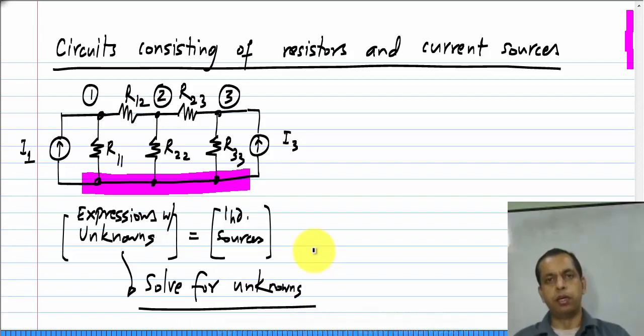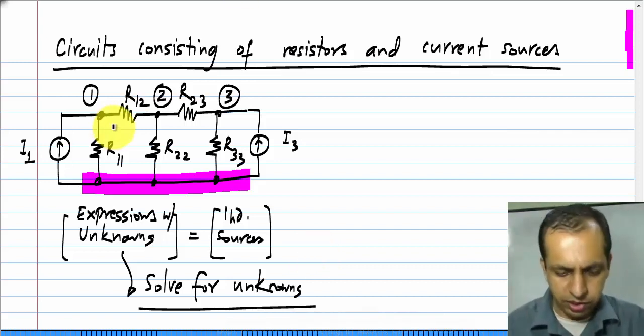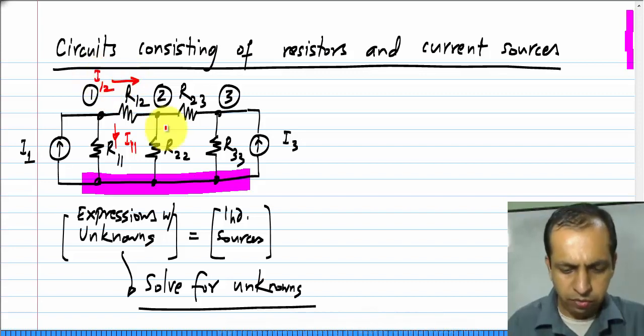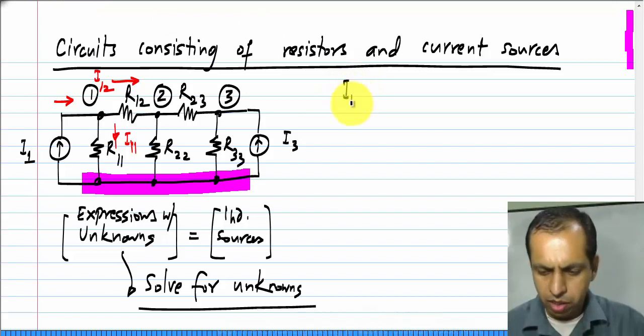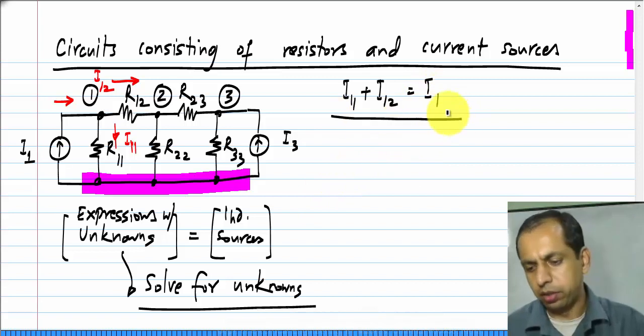So, what I mean is when I am writing down equations, I will push the terms containing independent sources to the right hand side and retain the terms containing the unknowns, the variables on the left hand side. Now, essentially what I have to write is for instance, I have to write that the current here, let me call it I11 for now and current over there I12 that has to be equal to the current coming in from the independent source. So, essentially I have to write I11 plus I12 equals I1.